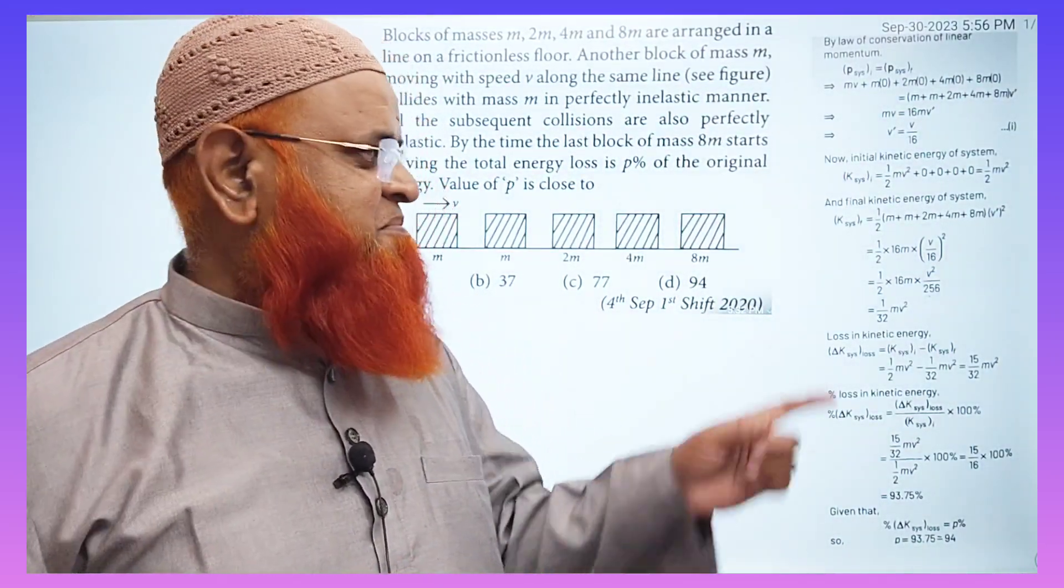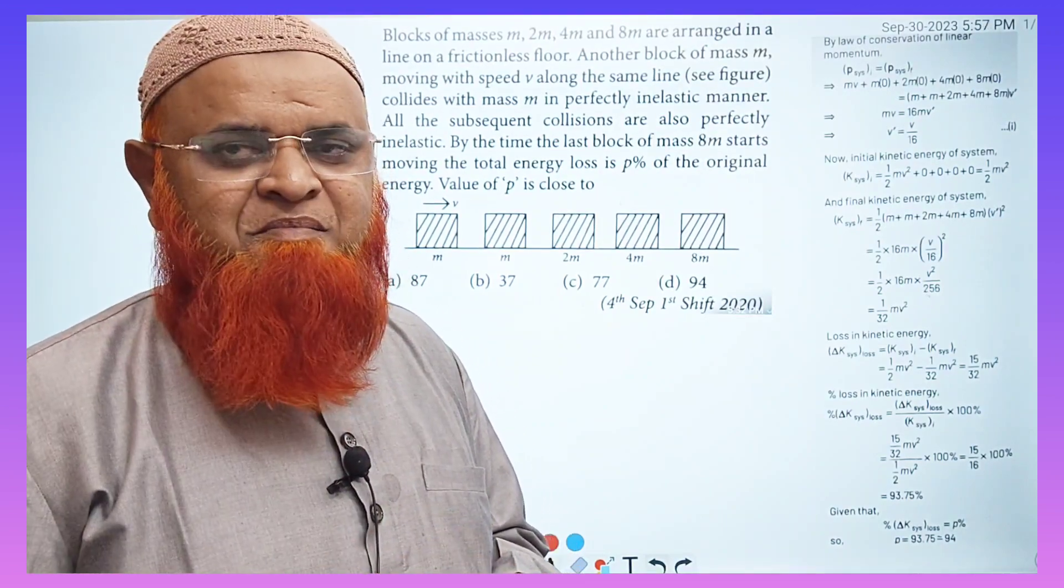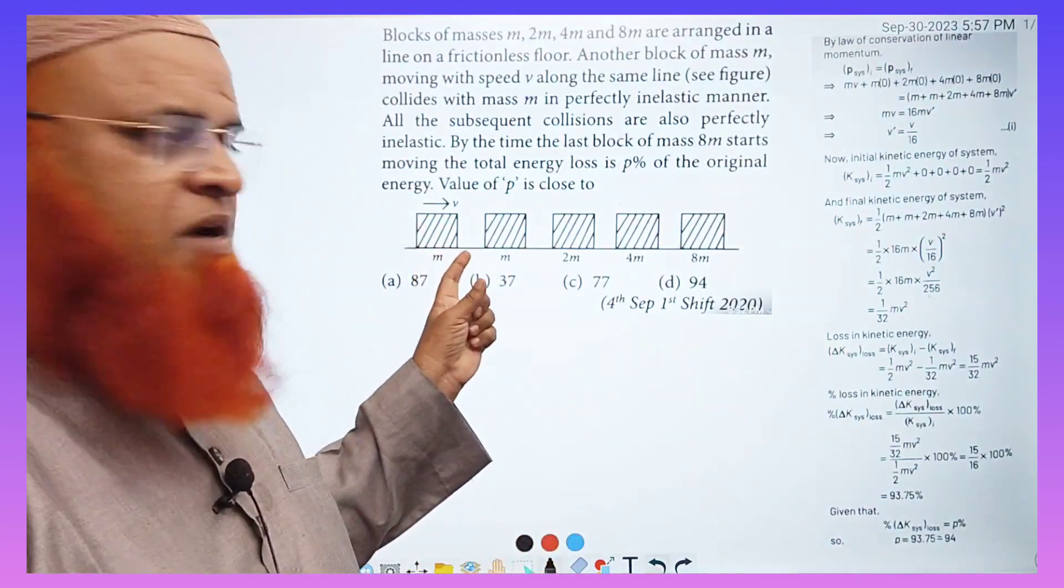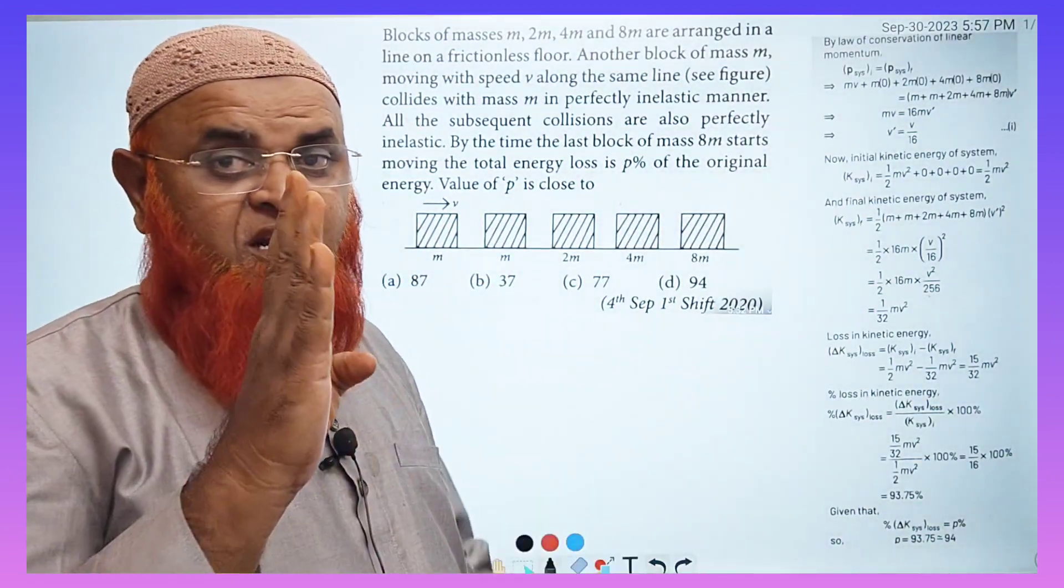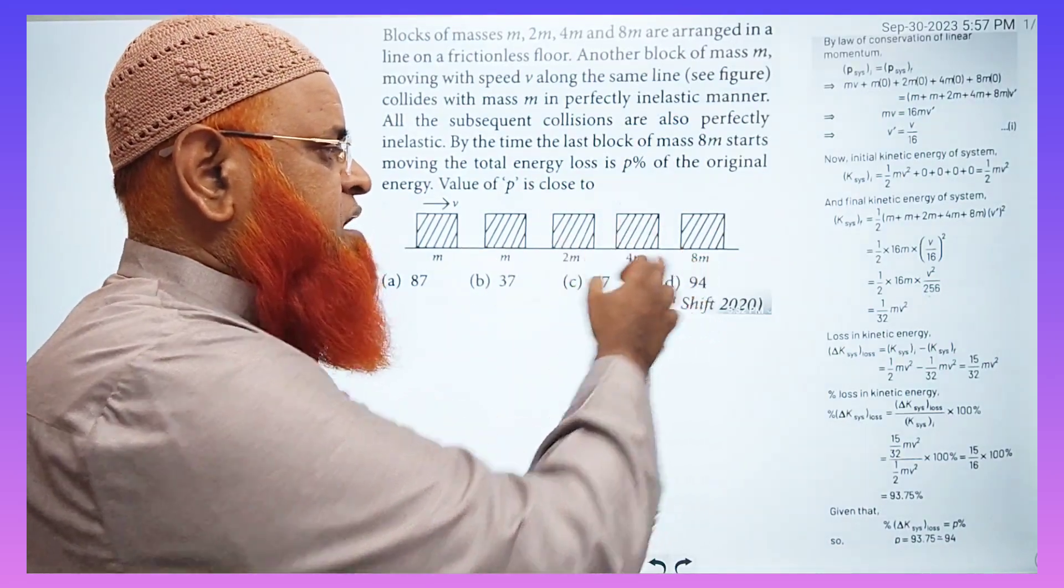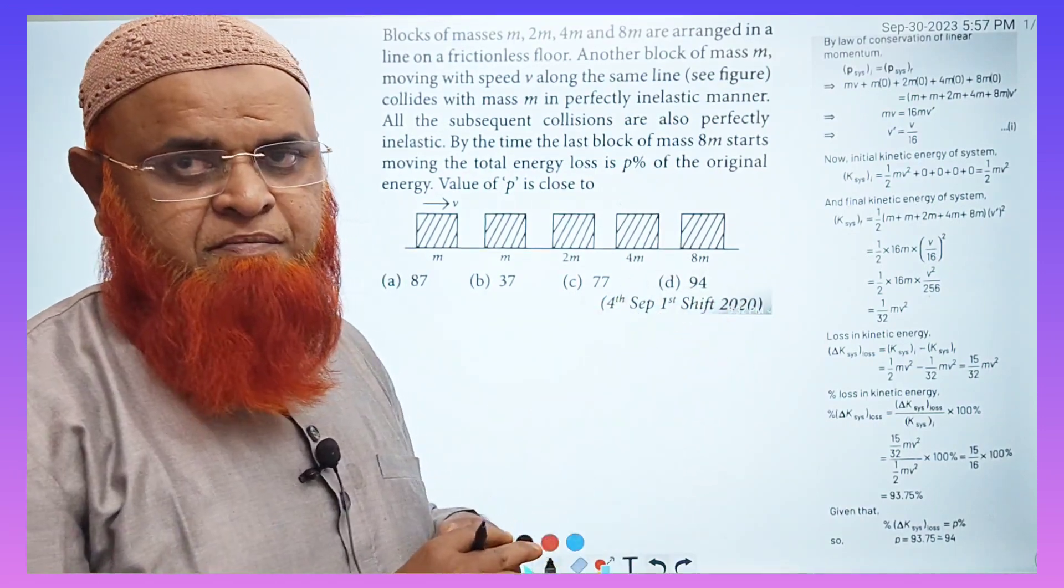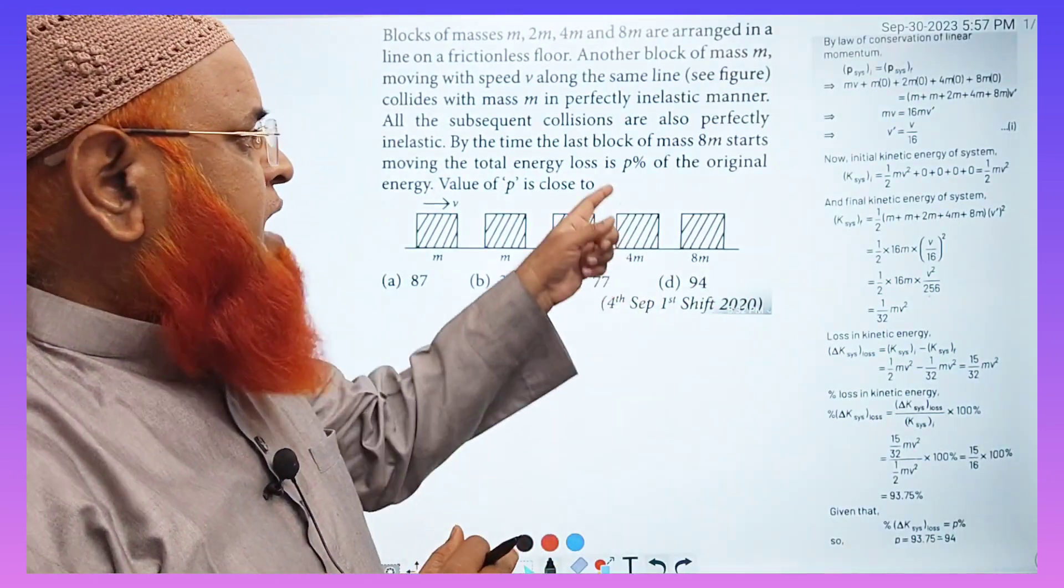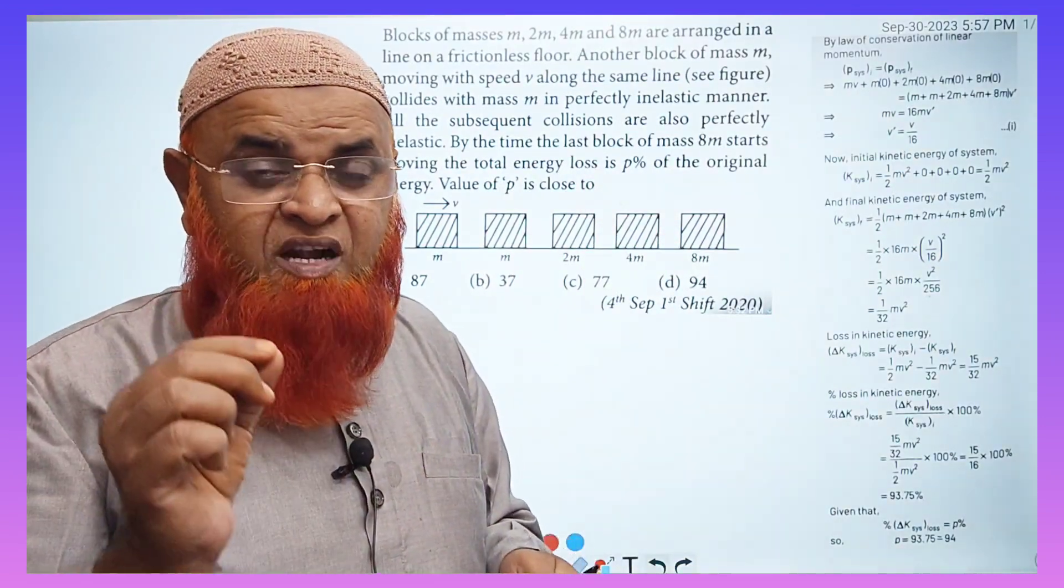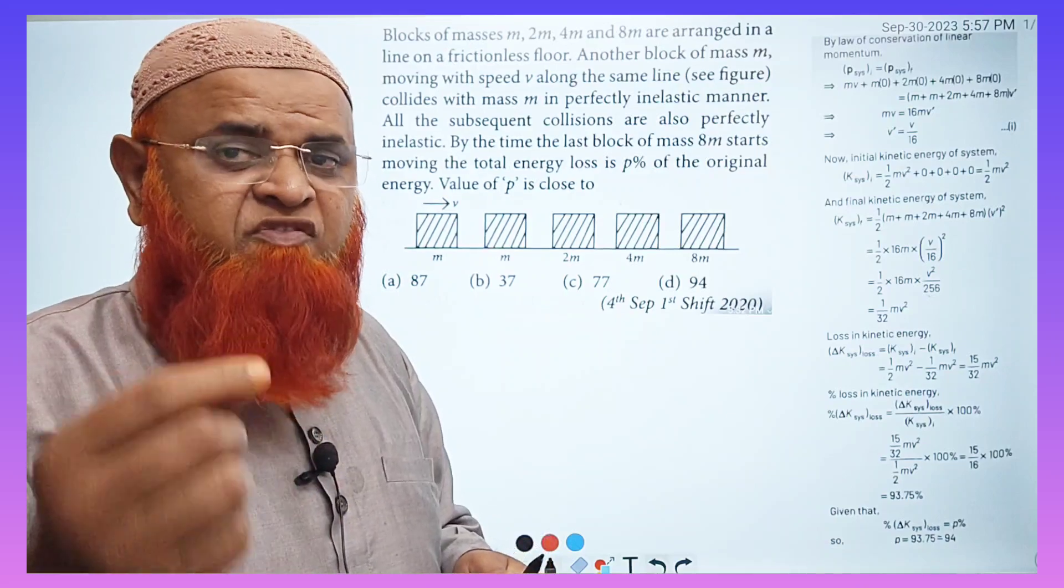Okay, my dear students, today I am going to give you a wonderful short trick. This is a block of mass m that collides with four blocks: m, 2m, 4m, and 8m. They stick together, move with a common velocity, and he's asking us to find out the total energy loss. It's a perfectly inelastic collision. He's asking us to find out the loss of kinetic energy.